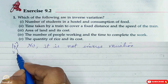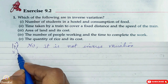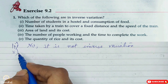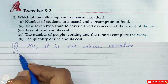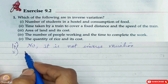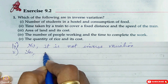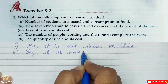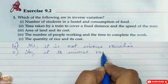Secondly, time taken by a train to cover a fixed distance and the speed of the train. Here the distance is fixed, and we consider time and speed. If we increase the speed of the train, less time will be taken to cover the fixed distance. So more the speed, less time taken; less the speed, more time taken. So yes, it IS inverse variation.